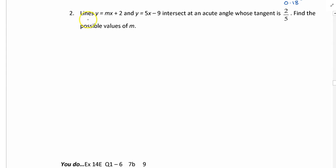Let's have a look at example two. You're given lines y = mx + 2 and y = 5x - 9. We're given the equation of two straight lines in a nice format. They intersect at an acute angle whose tangent is 2/5, so the tangent of the angle is 2/5. Find possible values of m. So really, what's this question asking? This question is really asking you to find a gradient. The other unusual thing is we're told what the tangent of the angle is.